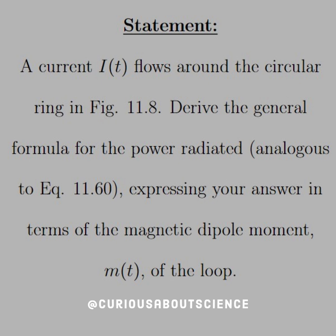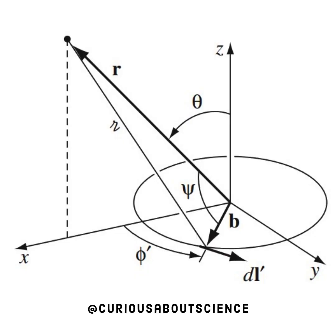A current I, as a function of T, flows around the circular ring in figure 11.8. Derive the general formula for the power radiated, analogous to equation 60, expressing your answer in terms of the magnetic dipole moment m of the loop. Alright, let's go look at our diagram.